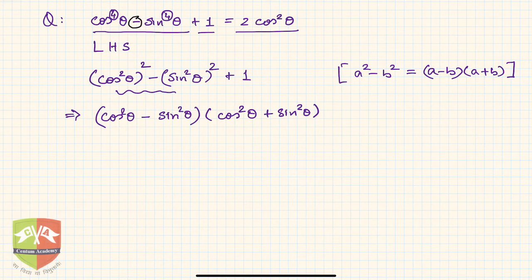So hence my a here is, if you look closely, a is nothing but cos²θ, not cosθ right. Because there is a square on cos as well and b is sin²θ. So using this I can write like this.